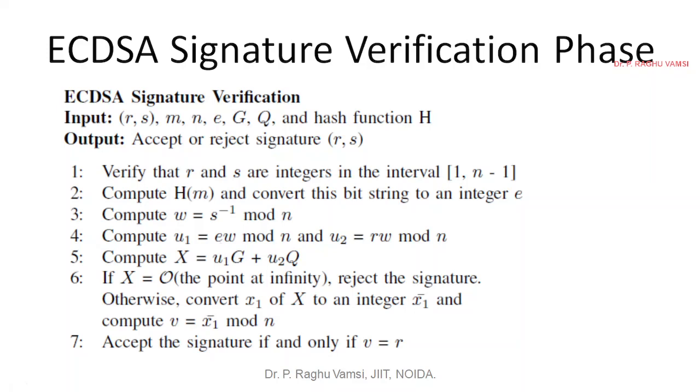E is the public key here. Compute u1 equals ew mod n and u2 equals rw. So r value that you have already got in the signature and w you have computed here. rw mod n.